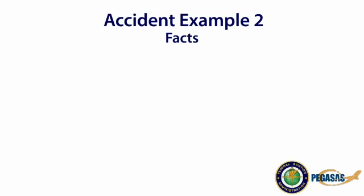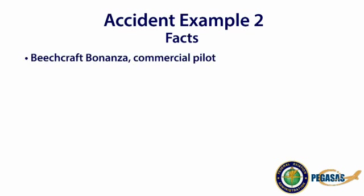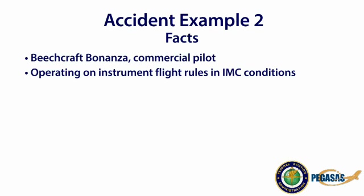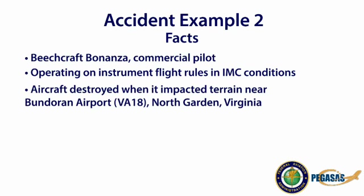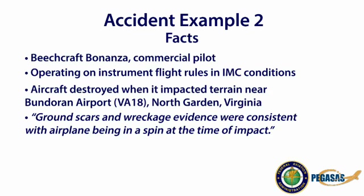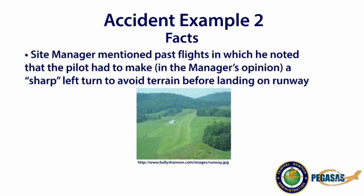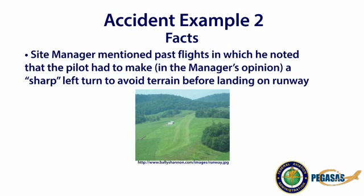In the second accident case study, the aircraft was a Beechcraft Bonanza B36TC flown by a commercial pilot, operating on instrument flight rules in IMC conditions. The aircraft was destroyed when it impacted terrain near Bundaran Airport, North Garden, Virginia. Ground scars and wreckage evidence were consistent with the airplane being in a spin at the time of impact. The site manager mentioned past flights in which the pilot had to make a sharp left turn to avoid terrain before landing on the runway.